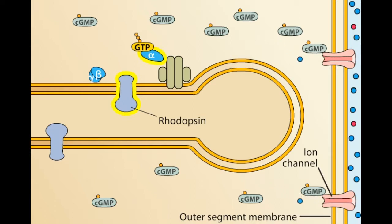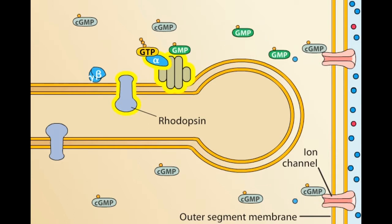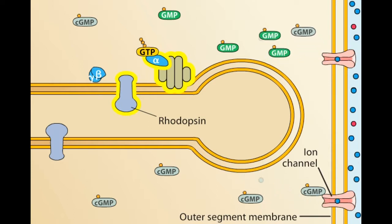The alpha subunit of transducin then activates a phosphodiesterase in the disc membrane. Phosphodiesterase hydrolyzes cyclic GMP, thus lowering the concentration of cyclic GMP throughout the outer segment. As the concentration of cyclic GMP falls, this molecule no longer binds to and holds open ion channels in the surface of the outer segment membrane.